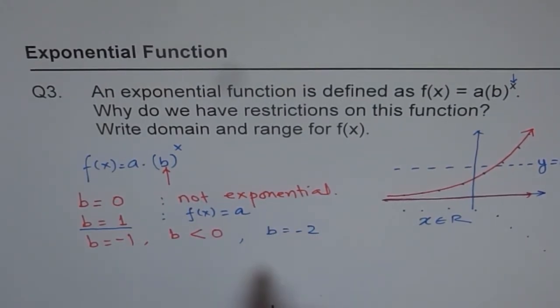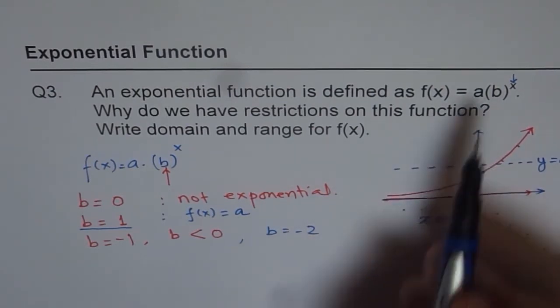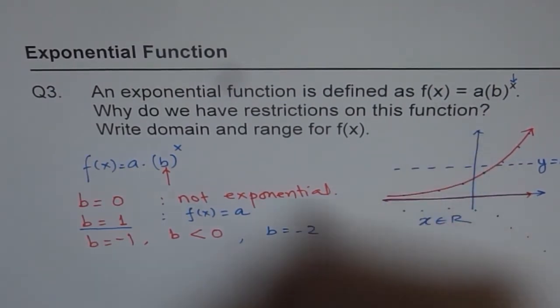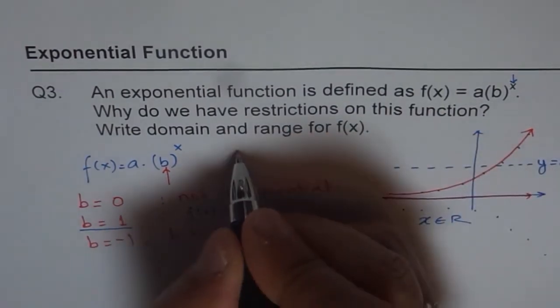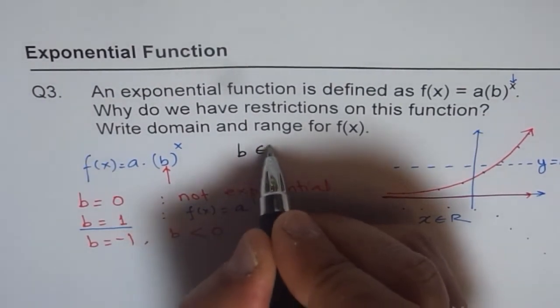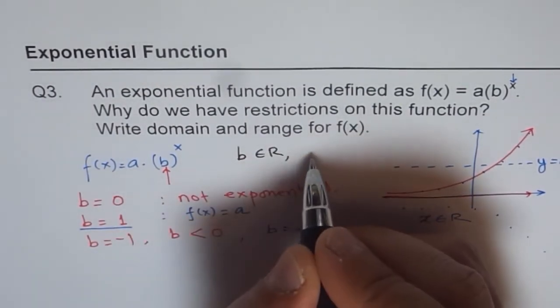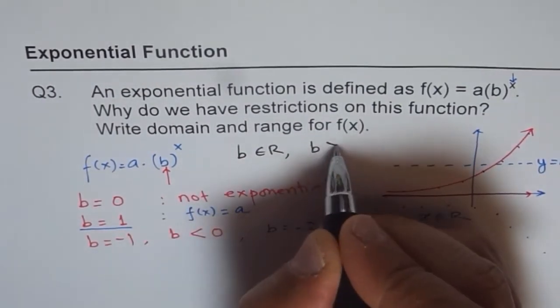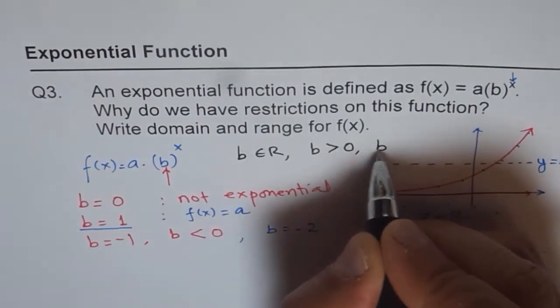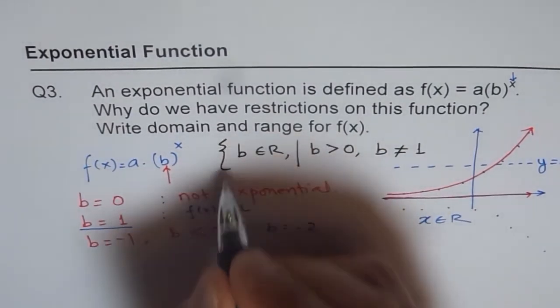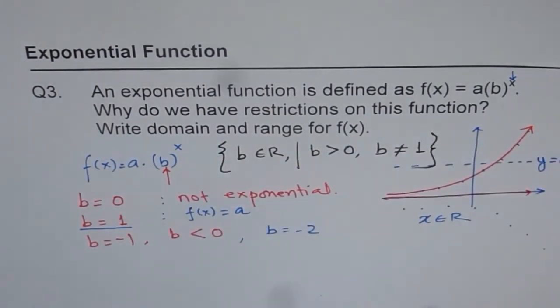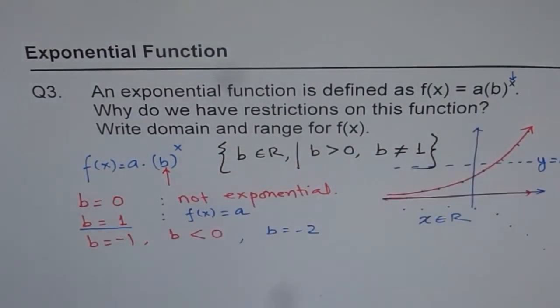So therefore, because of this, we have restrictions on b. So the restriction is that b should be always non-negative. So b belongs to real numbers, of course. And b is greater than 0. But b is not equal to 1. So these are all the restrictions which we have. And these restrictions are actually on the base of the function. That is very important to understand.